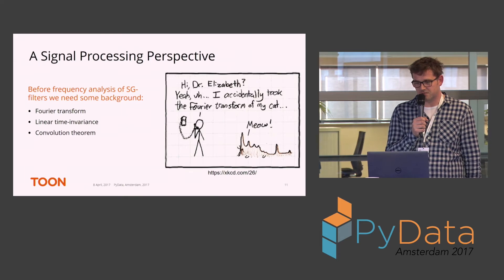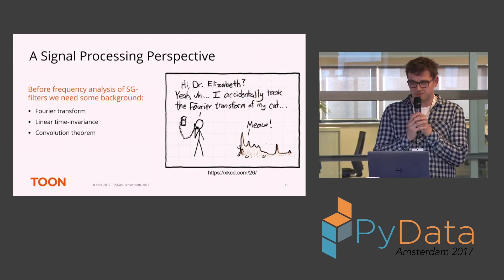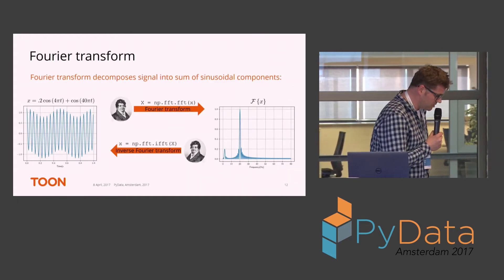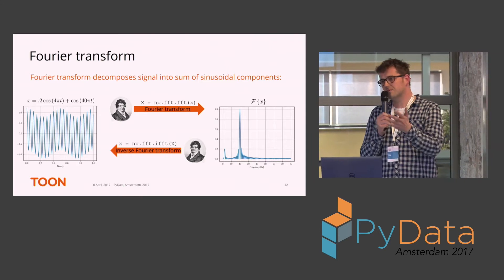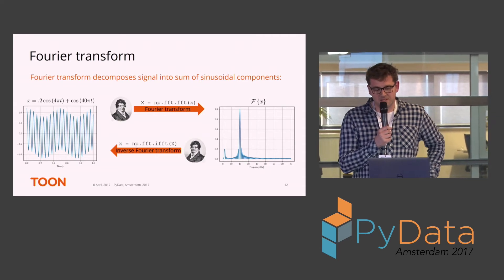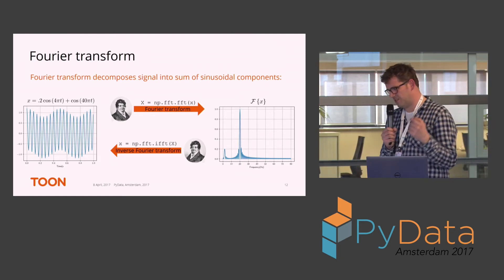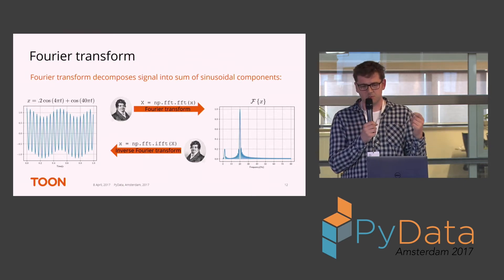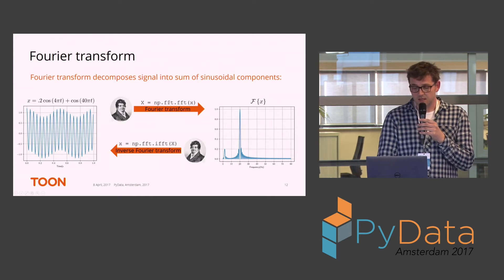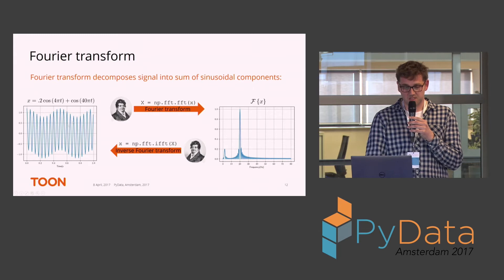This is actually my favorite XKCD comic — somebody accidentally took the Fourier transform of their cat. Some basics about the Fourier transform: the basic concept is that if you apply a Fourier transform to a signal it will be decomposed into a sum of sinusoidal components — technically a sum of complex exponentials. The Fourier transform is inside the NumPy package in a complete package called FFT, and the FFT function — fast Fourier transform — decomposes your signal into the frequency domain.